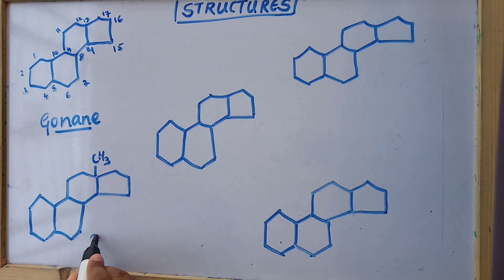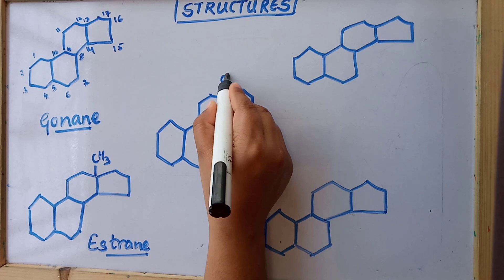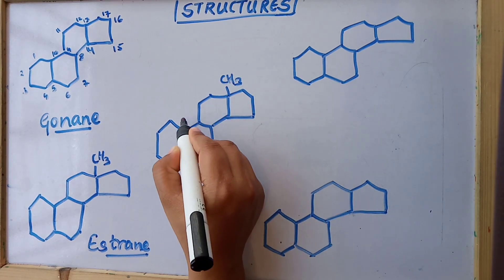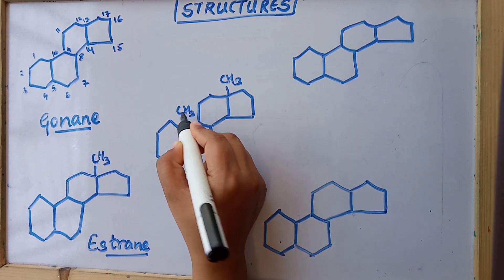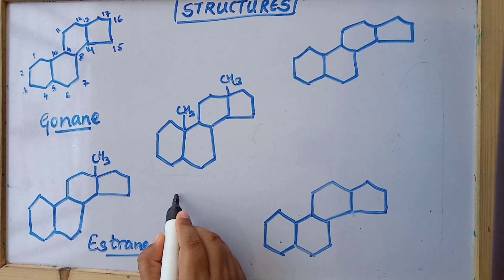And if in this position we add CH3 over the 13th place and at C10 CH3, this becomes androstane.